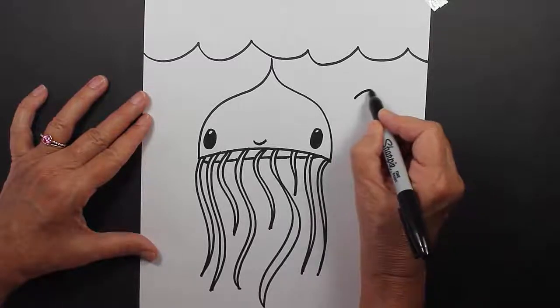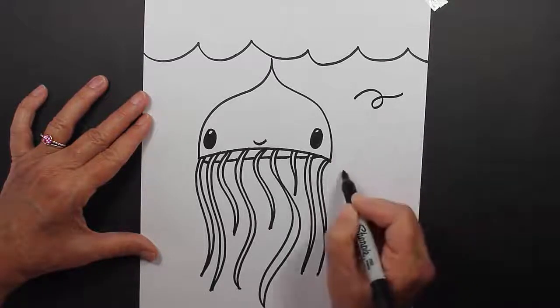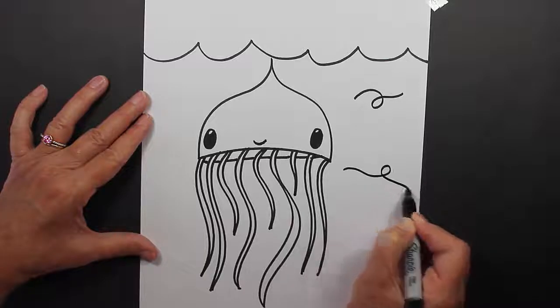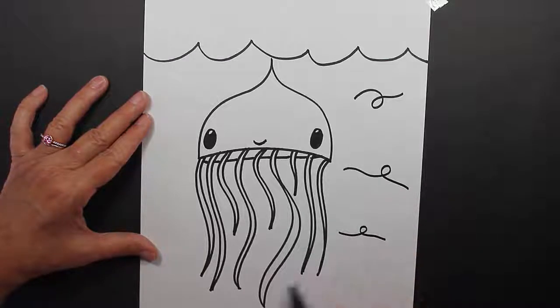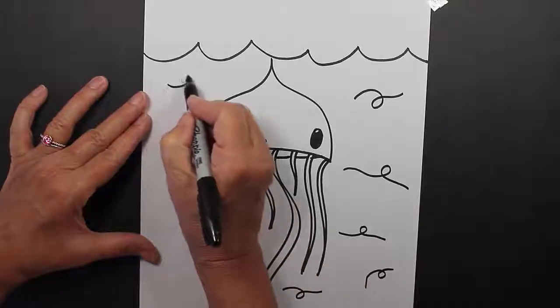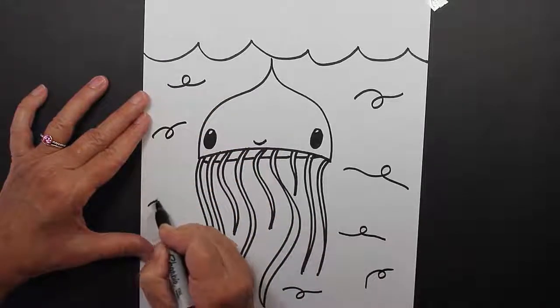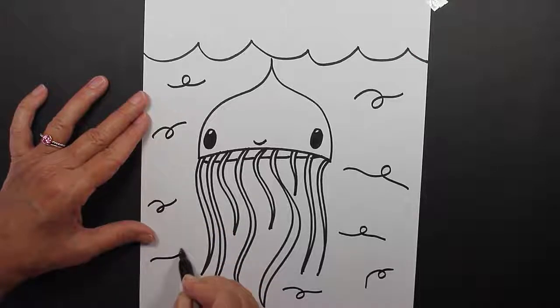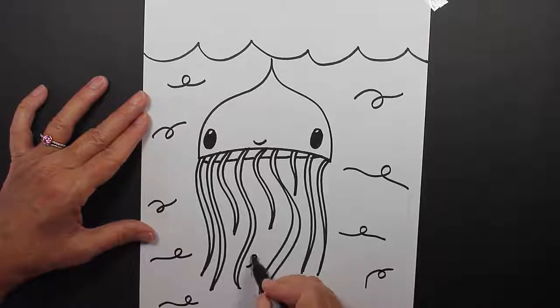You can also make little swirlies to represent the water. They're just loop-de-loop lines. Maybe even one right here.